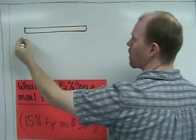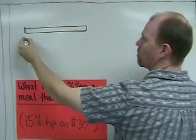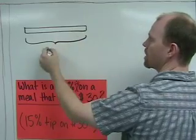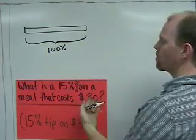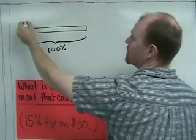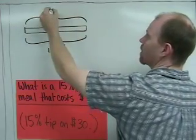And this little percent bar, the entire bar represents 100%. 100% is $30. The entire meal costs $30.